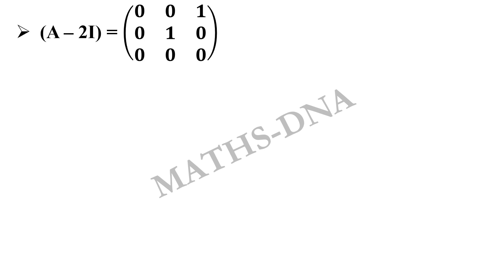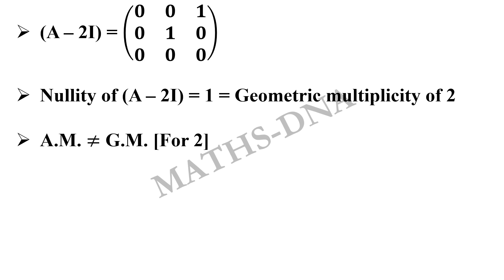Now we follow the similar process for 2. We know that algebraic multiplicity of 2 is 2 because it is repeated once. We find the geometric multiplicity of 2. First, we subtract 2I from the given matrix. Then we can clearly see that the nullity of A minus 2I is equal to 1 which is geometric multiplicity of 2.